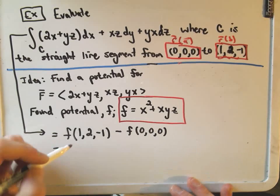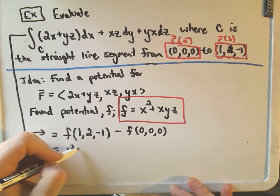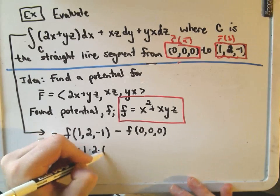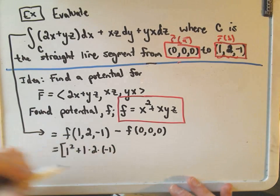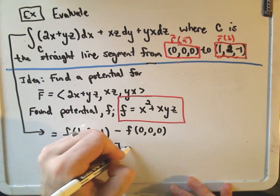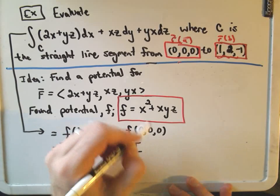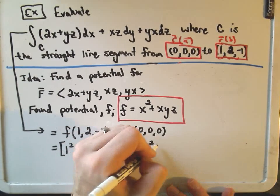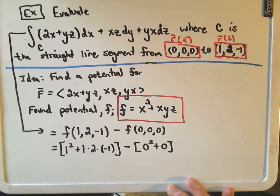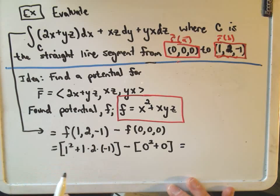So if we replace x with 1, we'll get 1 squared plus 1 times 2 times negative 1. So that's our f of our endpoint, minus f of the origin. Well, we would get 0 squared plus a bunch of zeros.